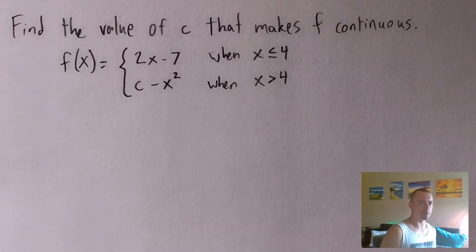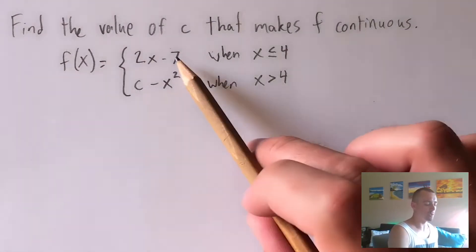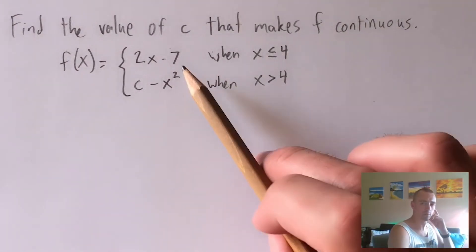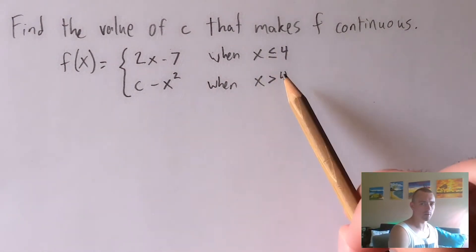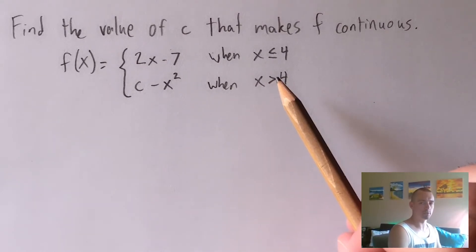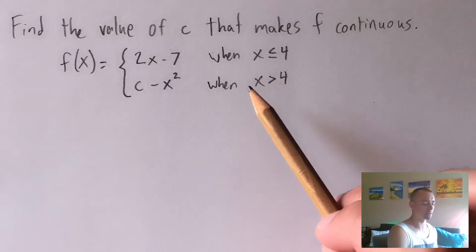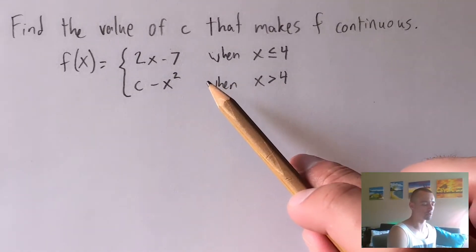When doing these problems, you first need to make sure that each piece of the piecewise function is continuous within the domain where it's defined. Once you've confirmed that, you can move on to making sure the piecewise function is continuous when you switch from one function to the other.